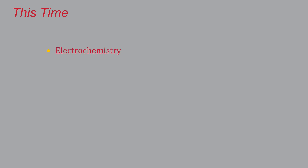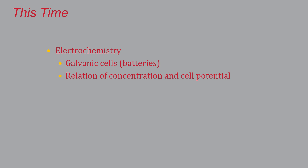Welcome to the next lesson in the electrochemistry chapter. We'll be talking about galvanic cells — essentially batteries — and how they work. We'll also discuss how the concentration of components affects the voltage, commonly called the cell potential.